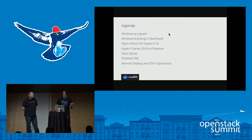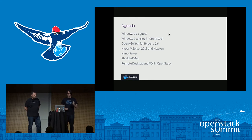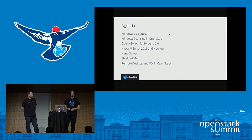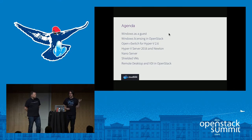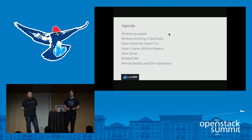Hyper-V Server 2016 — as you might be aware, Windows Server 2016 just got released. We'll see what comes new there, especially for the freshly released Newton version of OpenStack. Nano Server. Shielded VMs — one of the great features we have in Newton. And Remote Desktop, open VDI in OpenStack.